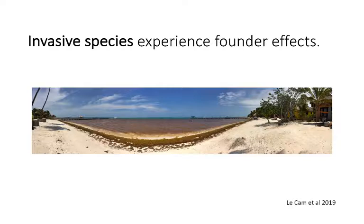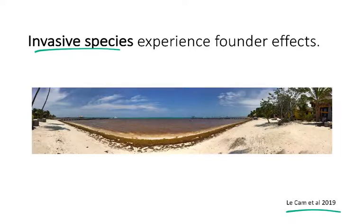Another specific type that experiences founder effects and bottlenecks are invasive species. If you have an invasive species colonizing a new habitat, only a few individuals are going to be starting that new population. One example is the sargassum that's common in the Caribbean and many other places right now. In that paper, they actually found low genetic diversity in that species, possibly because the original founder individuals had low genetic diversity, and that has continued through time.